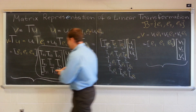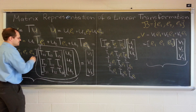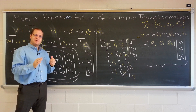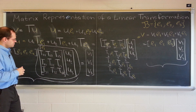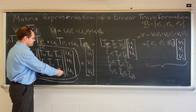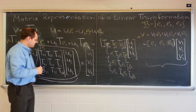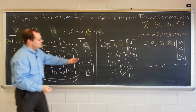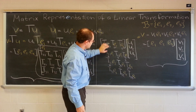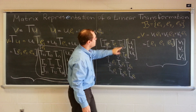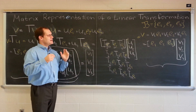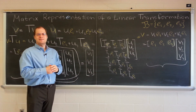This matrix is the representation of T(E1), T(E2), T(E3) with respect to the same basis. That's why those matrices are formed that way. We see that it's this matrix that is the representation of the image of each of the basis vectors under the transformation, and their representation with respect to the same basis. That's why that's the matrix that represents the linear transformation.